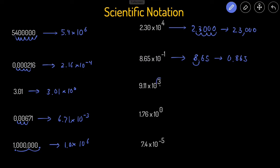The next one has a positive exponent, so we expect the final answer to be greater than one. We're going to move it to the right three times to make it bigger: one, two, three — then add another zero — and this becomes nine thousand one hundred and ten.